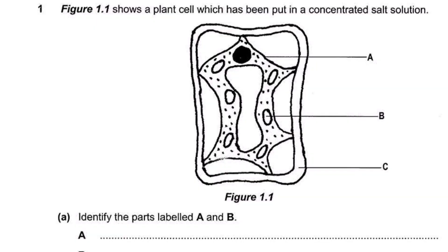We have this question where Figure 1.1 shows a plant cell that has been put in a concentrated salt solution. This is the result when a plant cell is put in concentrated solution. The cell wall remains in its shape, but the cell membrane loses water.